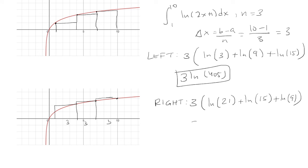That's 2,835. So our right-hand Riemann sum is 3 ln 2,835.